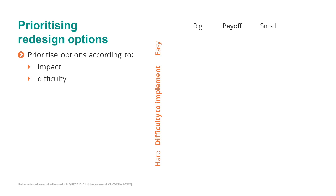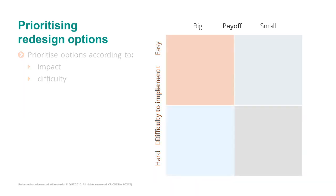We can organise redesign options in a so-called pick chart, which we have seen before in the context of qualitative process analysis. In a pick chart you organise items according to two dimensions — impact and difficulty — and divide them into quadrants.